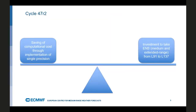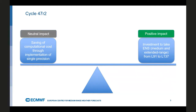Despite Andy having already given very detailed presentations — and I really recommend going back because he goes far more intricate into what happened in this cycle — I'll give a quick overview to set the context. Cycle 47R2 is de facto cost-neutral for us in implementation. That has to do with, on one hand, saving computational costs through the implementation of single precision, and on the other hand, an increase in ensemble model levels from 91 to 137, which brings the ensemble in line with the high resolution.